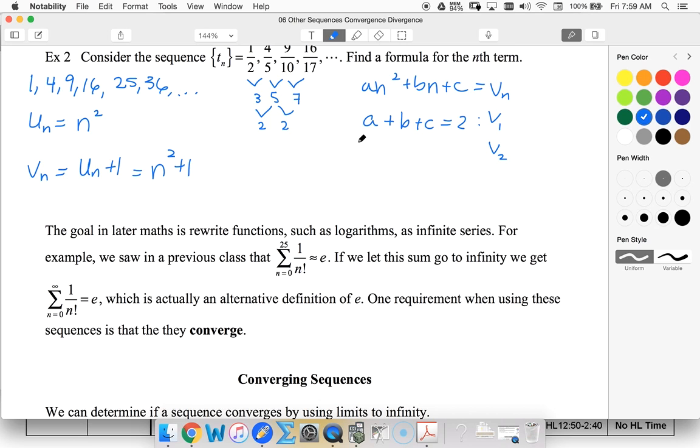so 4a, because 2 squared is 4, plus 2b plus c is 5, and then we could also make a third equation, v3, and have 9a plus 3b plus c equal to 10.